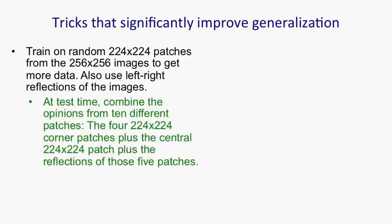At test time, he doesn't just use one patch — he uses a number of different patches: the four corners and the middle (giving five), then the left-right reflections of all those (giving ten). He runs all ten through the network and combines their opinions.